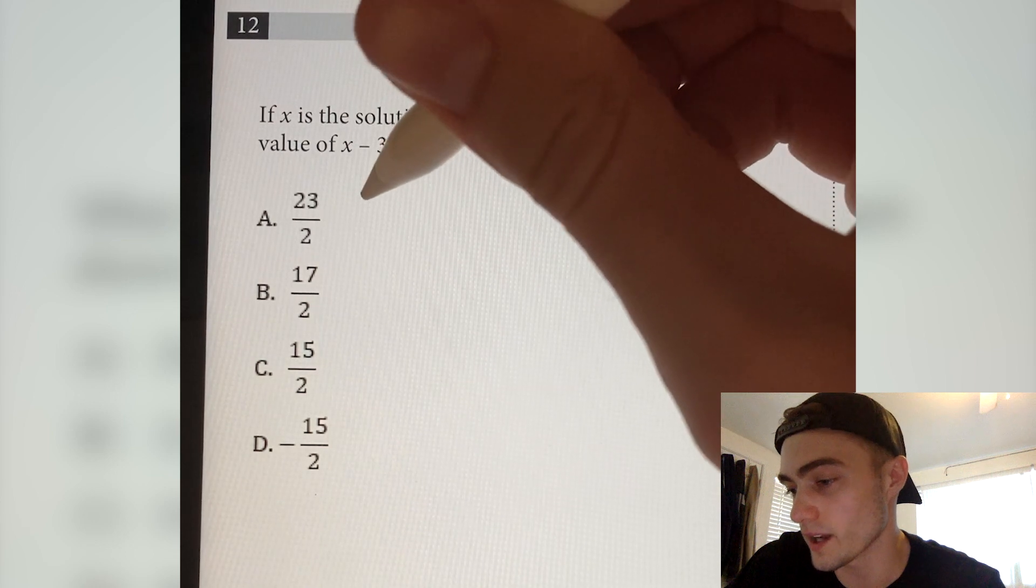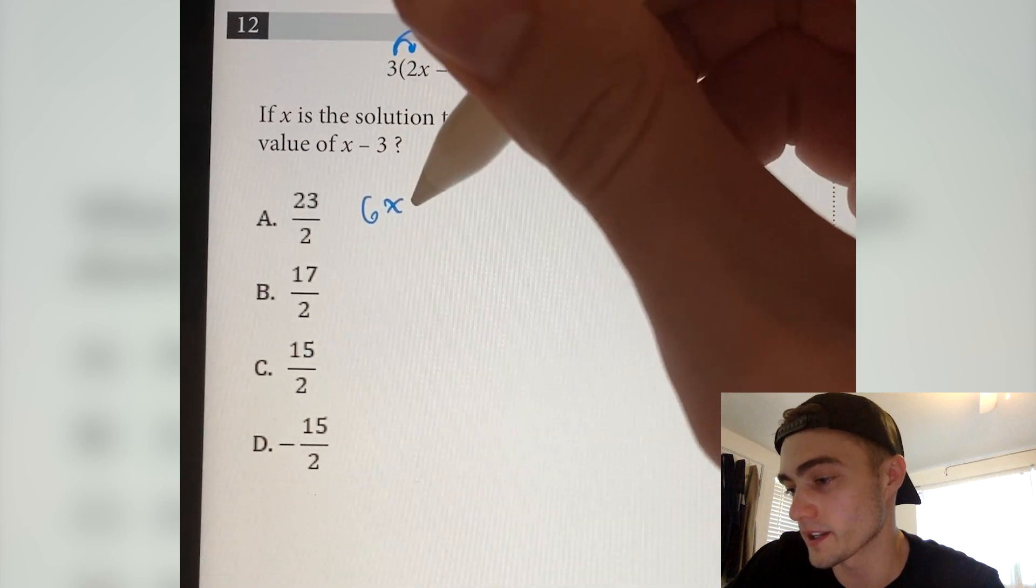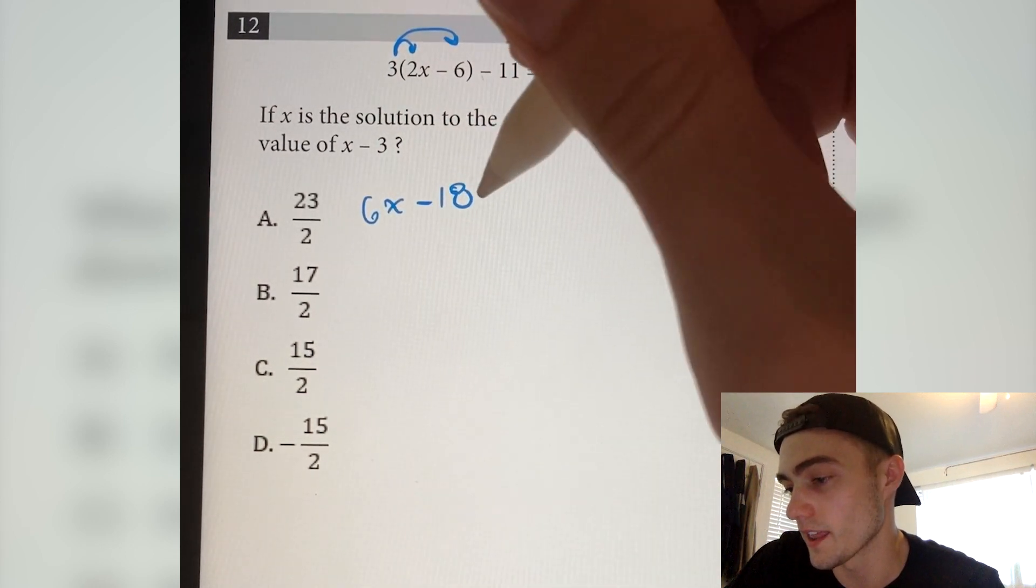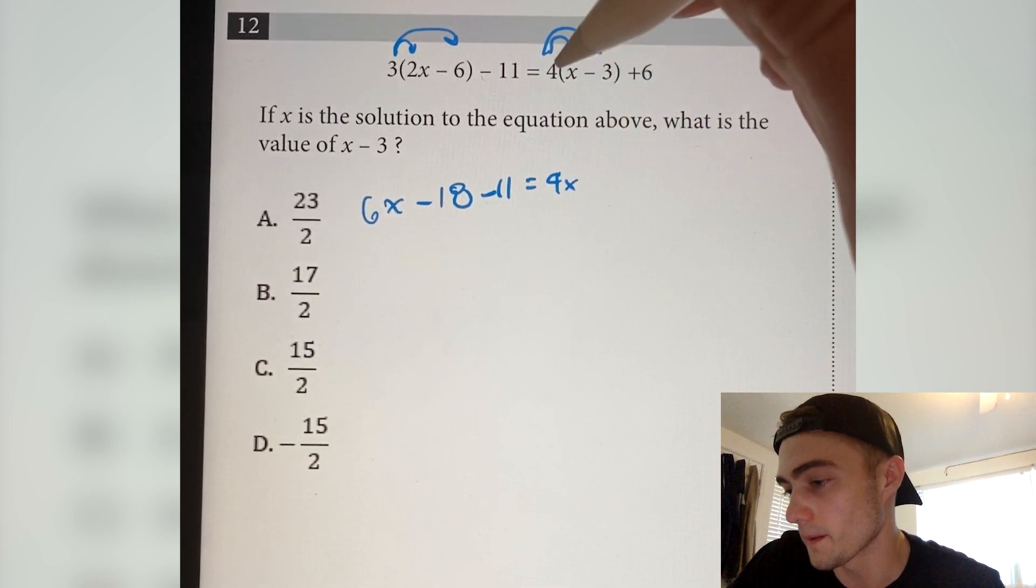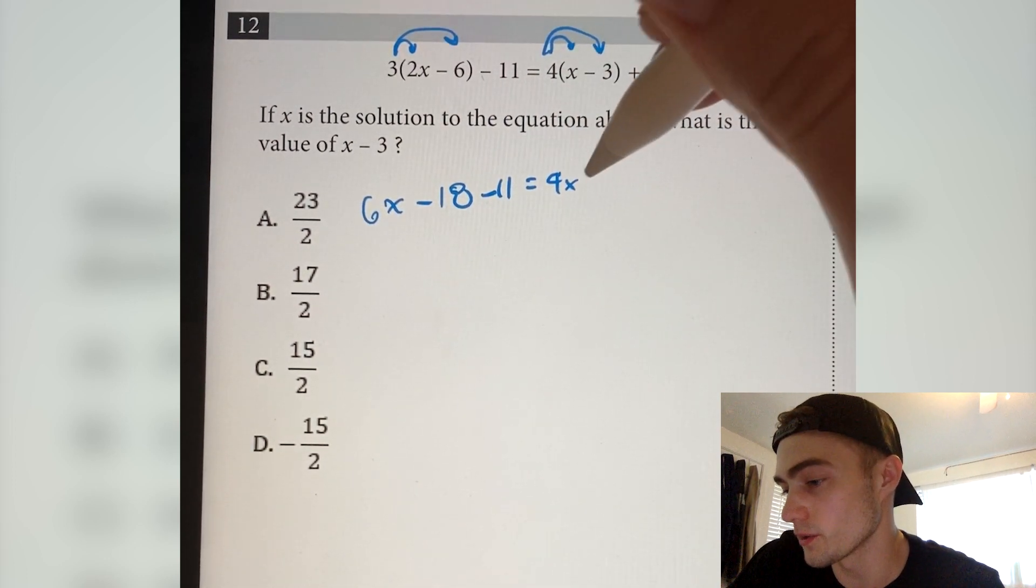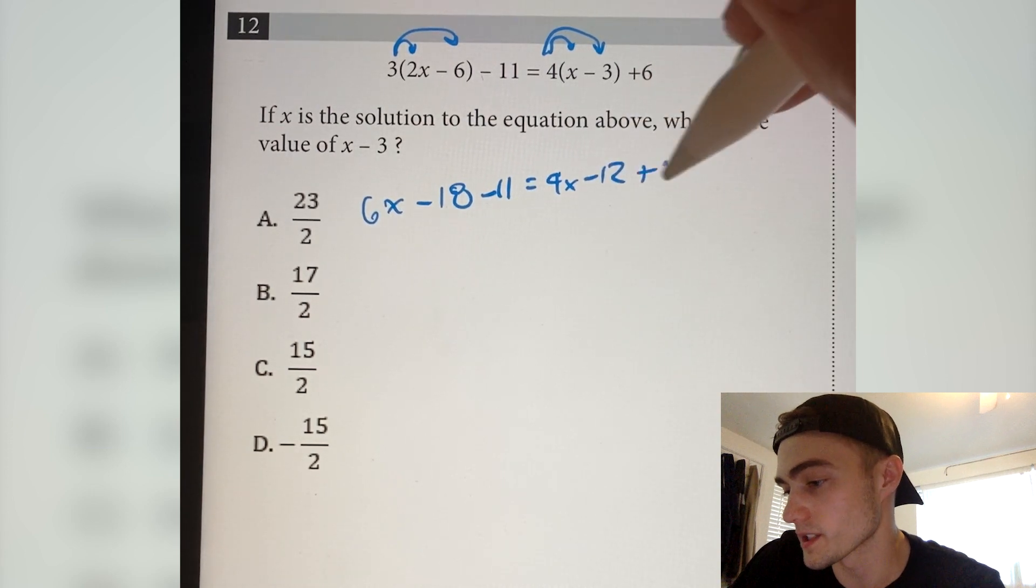So 3 times 2x, that's 6x. 3 times minus 6 is minus 18, and we still have a minus 11. And that equals 4x minus 4 times 3, which is minus 12, plus 6.